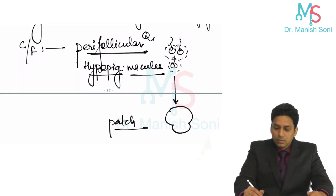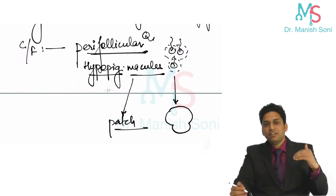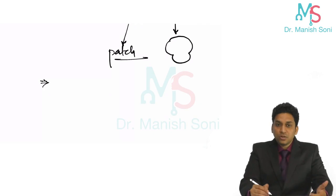These macules become patches. Initially they are perifollicular hypopigmented macules, which may merge together to form patches. As I told you, the lesions are going to be scaly.